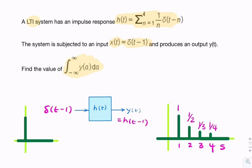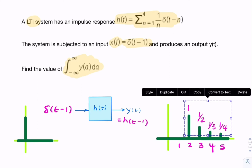We would expect the output to look exactly the same as the impulse response, but delayed by one second. So the impulses would be at t equals 2, t equals 3, t equals 4, and t equals 5.